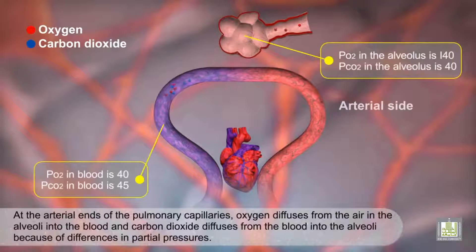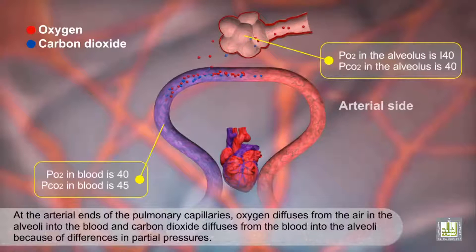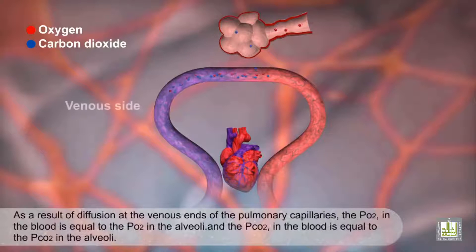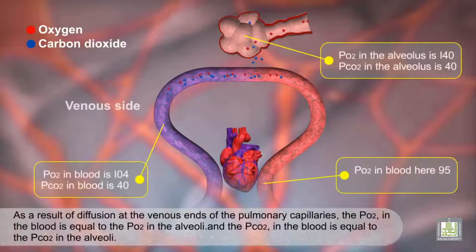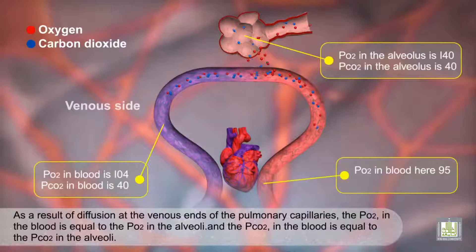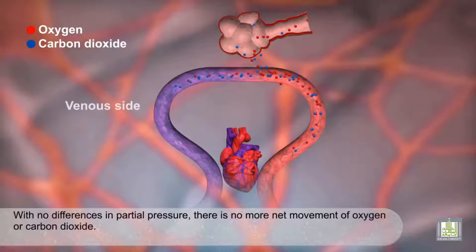At the arterial ends of the pulmonary capillaries, oxygen diffuses from the air in the alveoli into the blood, and carbon dioxide diffuses from the blood into the alveoli, because of differences in partial pressures. As a result of diffusion at the venous ends of the pulmonary capillaries, the PO2 in the blood is equal to the PO2 in the alveoli, and the PCO2 in the blood is equal to the PCO2 in the alveoli. With no differences in partial pressure, there is no more net movement of oxygen or carbon dioxide.